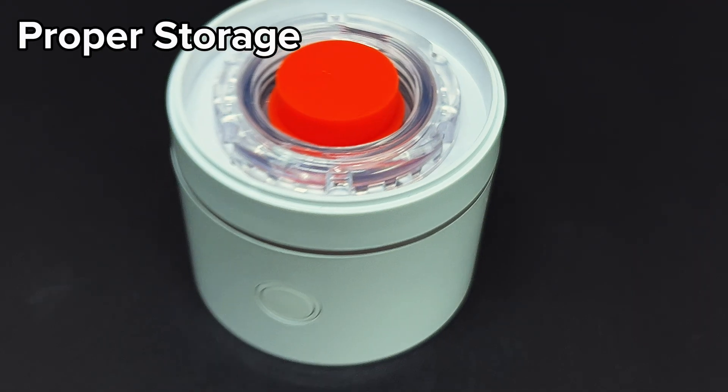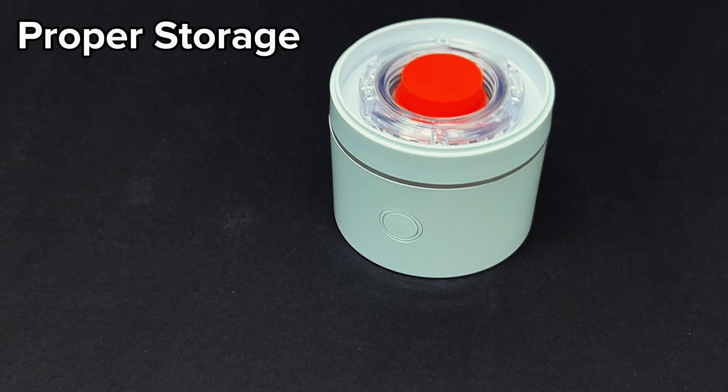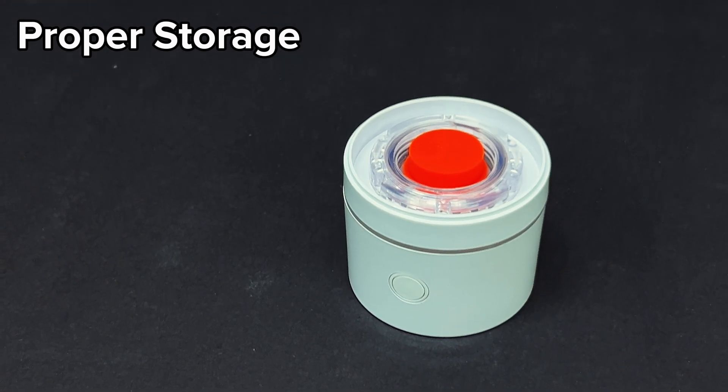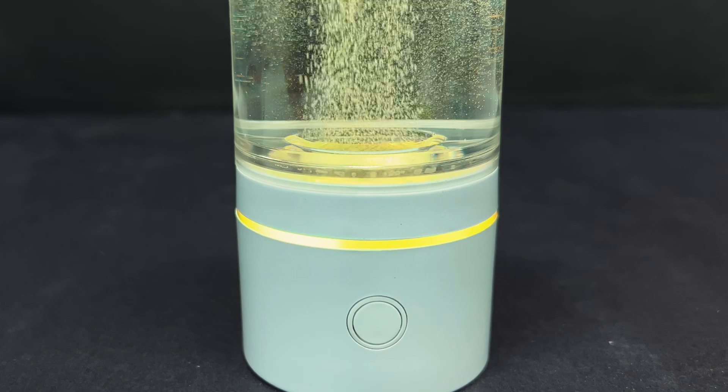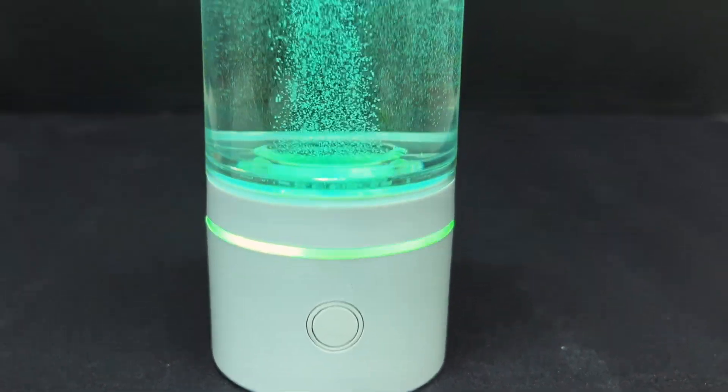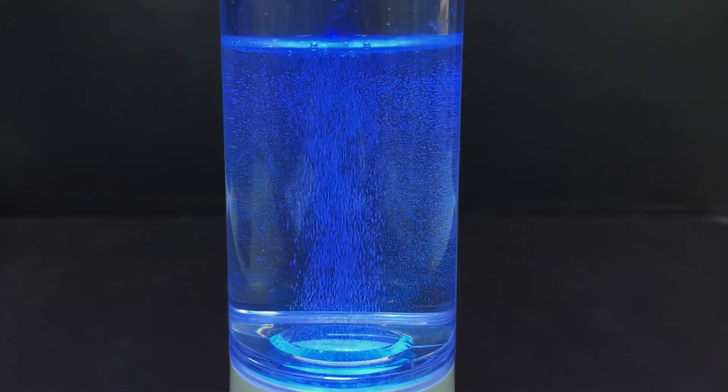Proper storage. When you're not using your bottle, keep the PEM moist by using the PEM plug. Store it in a cool, dry place away from direct sunlight. This helps preserve both the battery and the PEM.